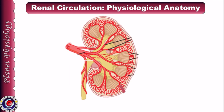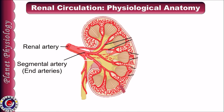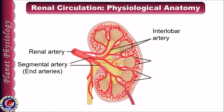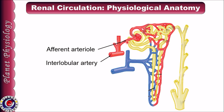Each kidney is supplied by the renal artery, which is a branch of the abdominal aorta. As it enters the kidney through the hilum, it is divided into segmental arteries. These segmental arteries are end arteries — they do not anastomose — and knowledge of which region is supplied by a particular segmental artery plays an important role in partial nephrectomy during renal cancer surgeries. Segmental arteries branch into interlobar arteries, which run between the renal pyramids, then arc around the pyramids to form arcuate arteries. Branches of arcuate arteries run into the renal cortex and form interlobular arteries, which give rise to afferent arterioles.